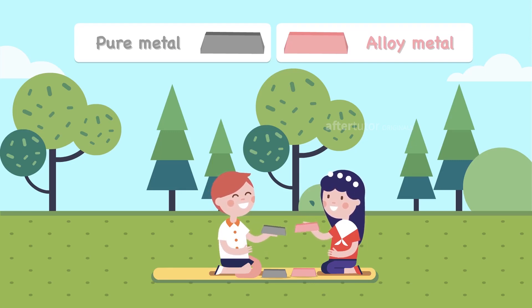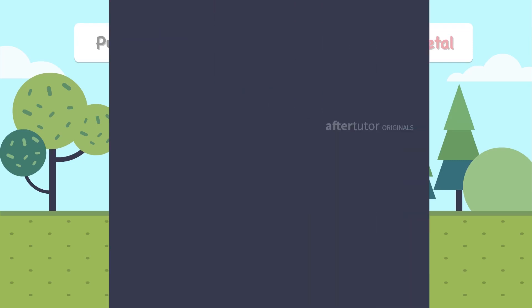Two of them were playing with pure metal and alloy metal. What is alloy? An alloy is a mixture of two or more metals.